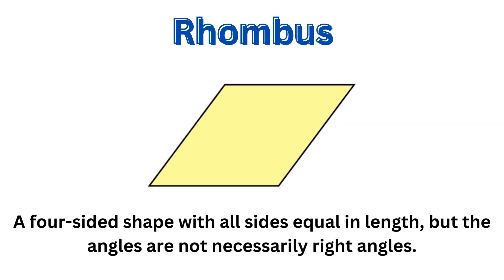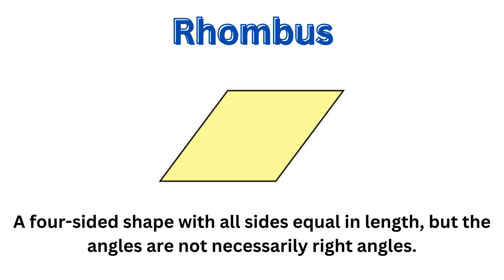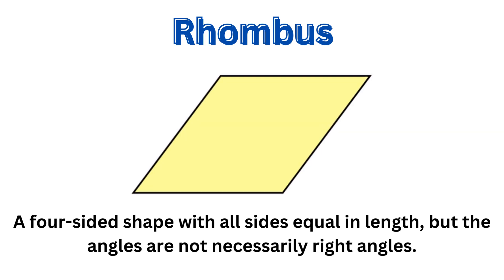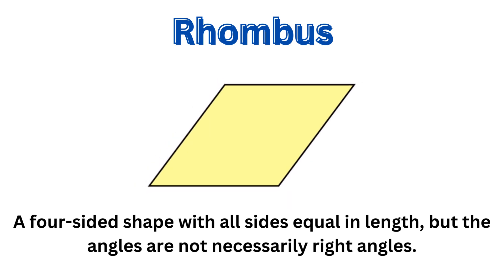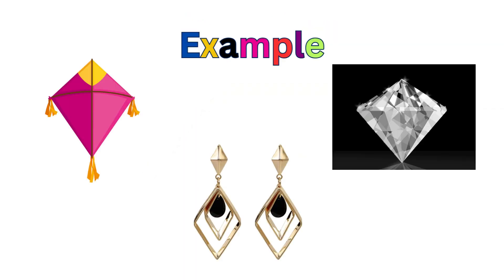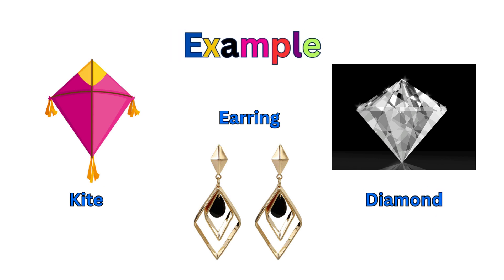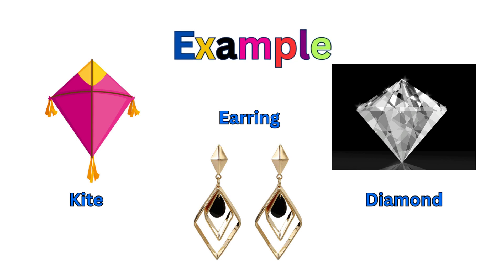This shape is a rhombus — a four-sided shape with all sides equal in length, but the angles are not necessarily right angles. The examples are a kite, an earring, and a diamond.